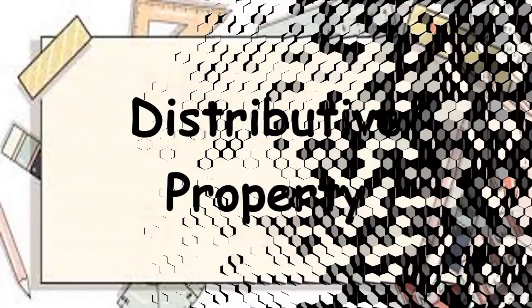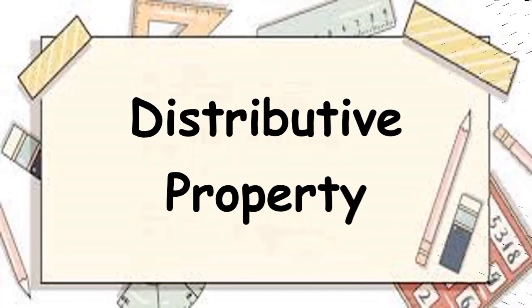To get the product of a binomial and a trinomial, we are going to use the distributive property. Let's have example number 1.